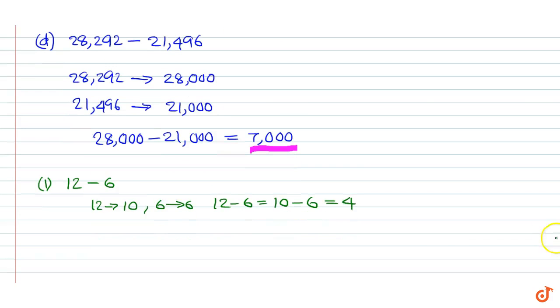Example 2: 56 minus 31. 56 rounds up to 60, 31 rounds up to 30, so 60 minus 30 is equal to 30.